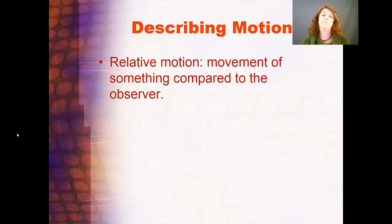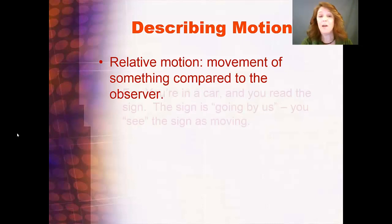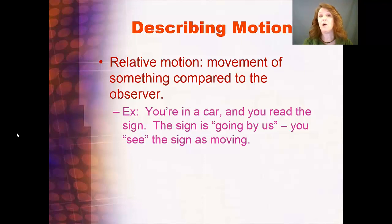Describing motion, we have relative motion. Relative motion is the movement of something compared to the observer, so it depends on the point of view of the observer. For example, you're in a car and you're reading a sign as you drive by. You see the sign as going by. Now the sign's not moving, you're moving. It's your perspective, it's your reference point. But you're looking at the movement of the sign because you feel like you're sitting still in a car, and the sign is going by you.